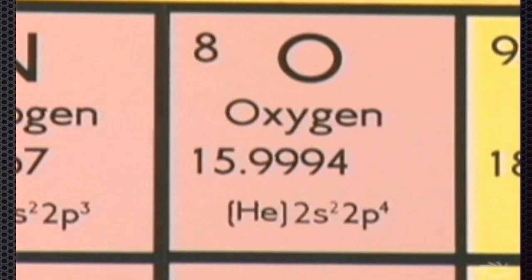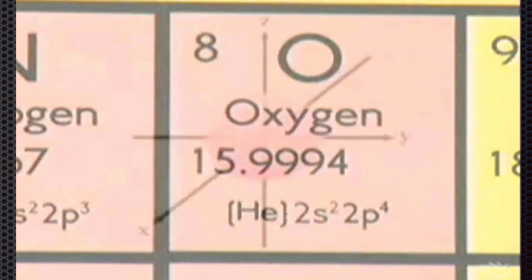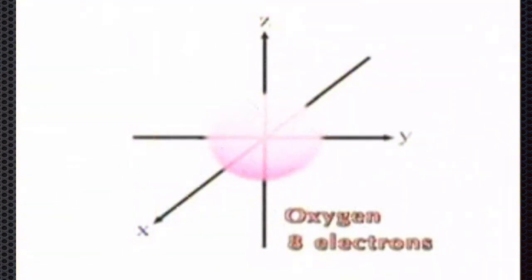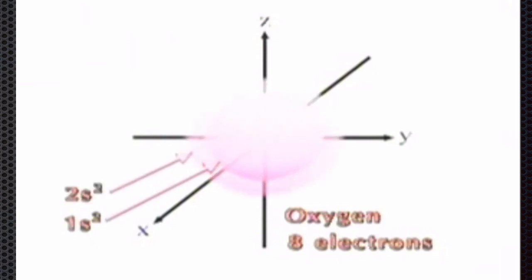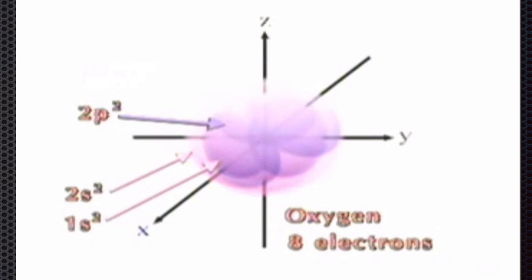Look at oxygen, for example — element eight. A neutral oxygen atom has eight electrons. The two in the first energy level are in the S orbital. In the second energy level, two are in an S orbital. And then as the P orbitals are filled, one electron goes into each of the P orbitals and the last electron pairs with P1.